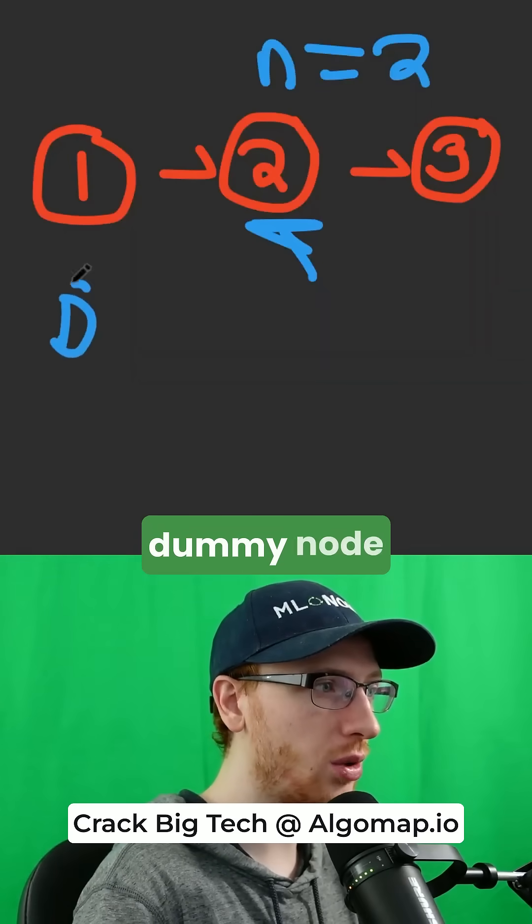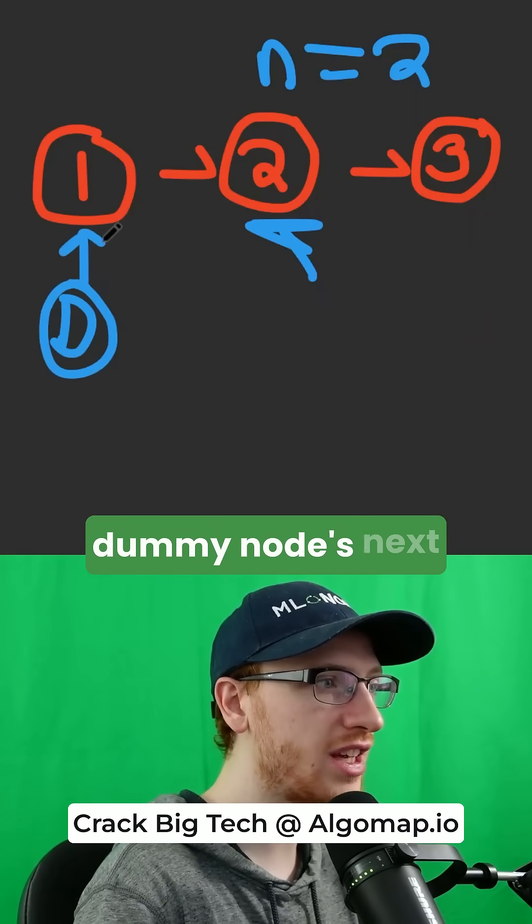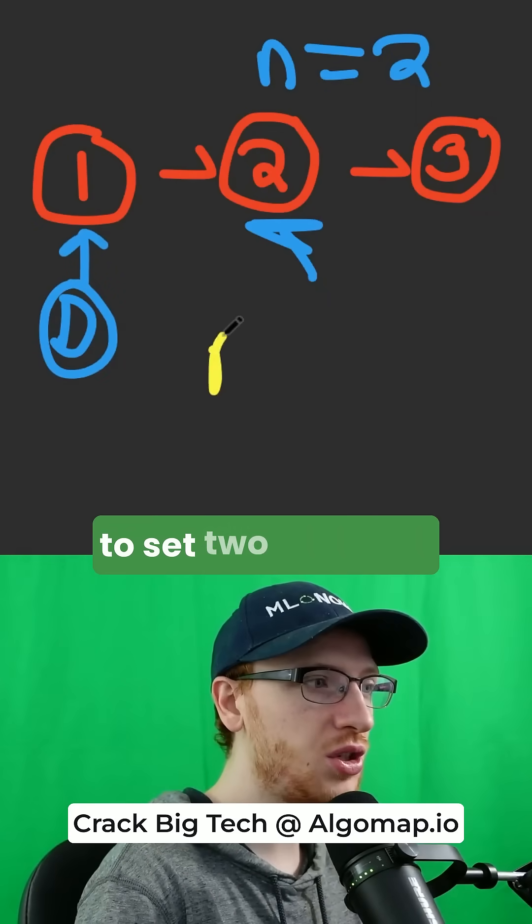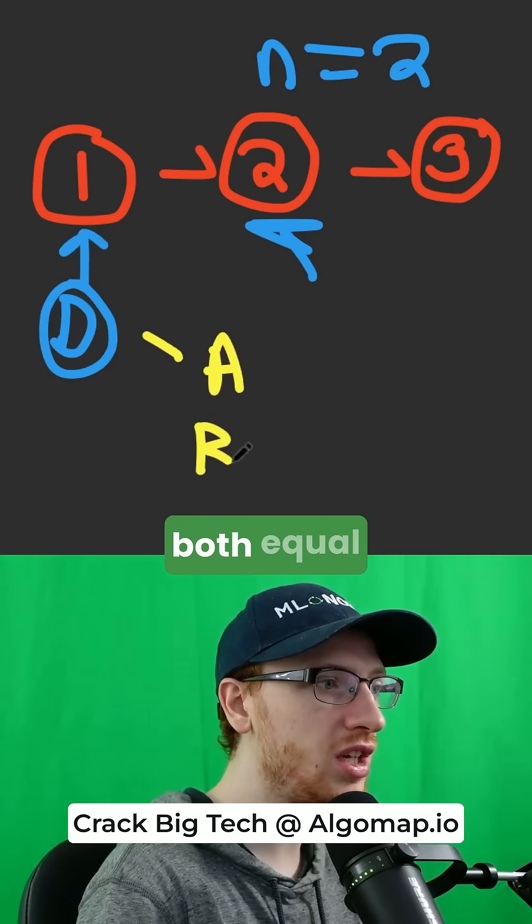We'll start off by creating a dummy node, and we want to point that dummy node's next over to the head. Then we're going to set two pointers, a and b, both equal to the dummy.